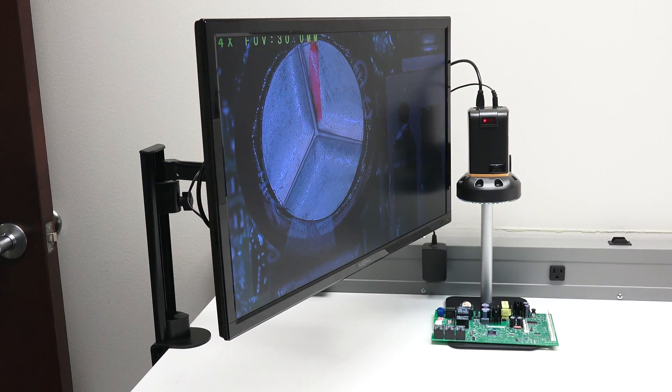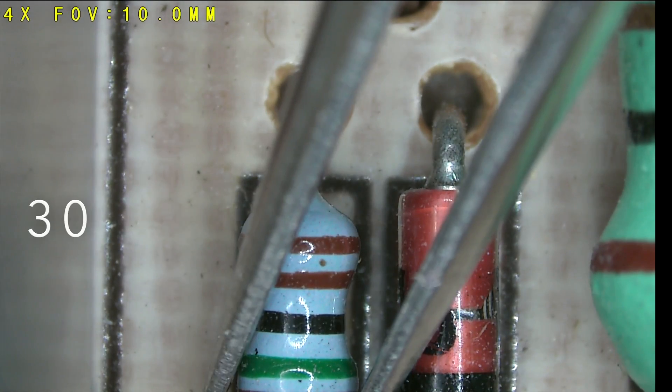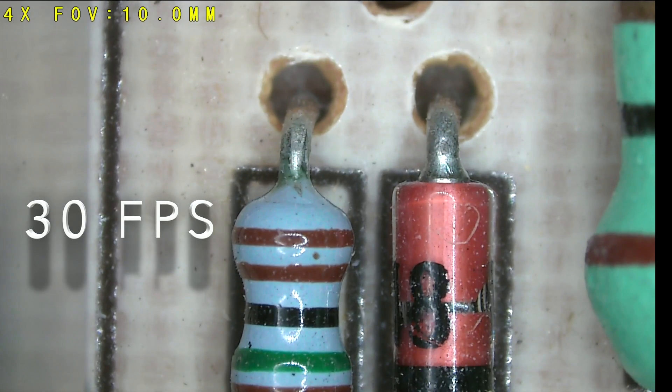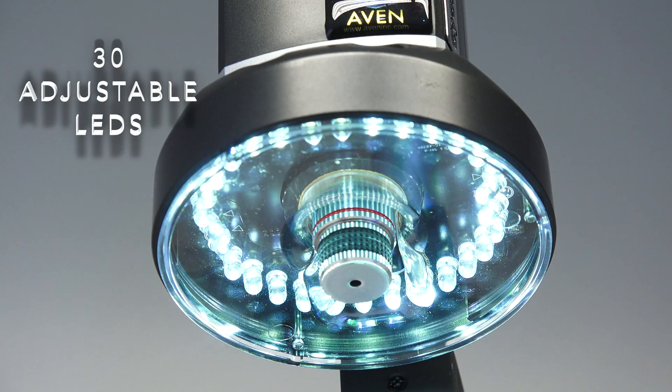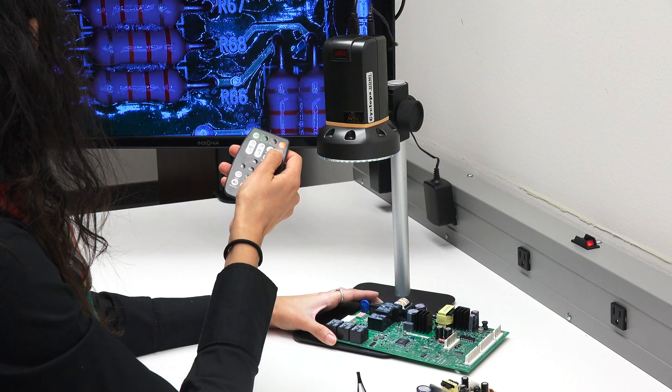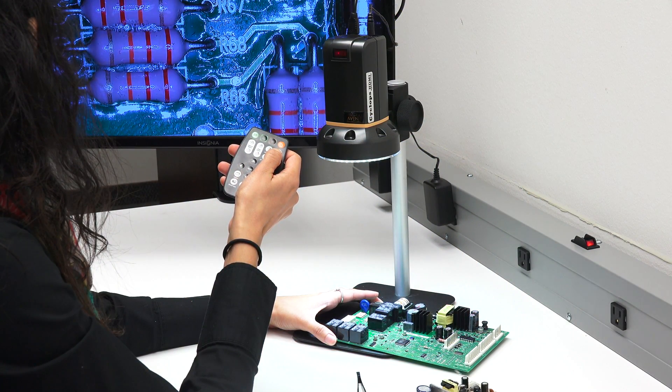The 2-megapixel CMOS sensor duplicates both color and depth at 30 frames per second without the lag commonly associated with cameras. A 30 LED integrated adjustable intensity ring light allows for examination of objects with various stages of light.